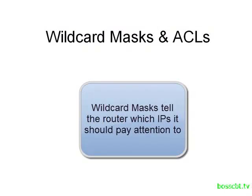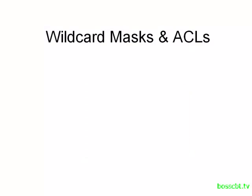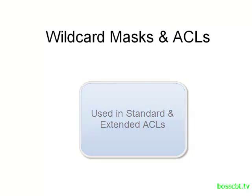We use a wildcard mask in order to tell the router which IP addresses to look at — should it just pay attention to one, should it look at a small range like a subnet, or should it look at a very large range of many IPs. Wildcard masks are used in both standard access lists and extended access lists, so they apply to both.